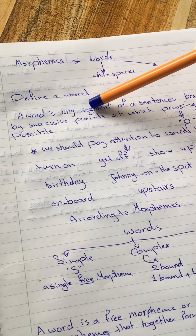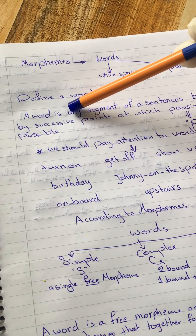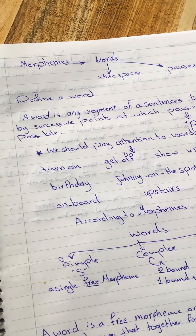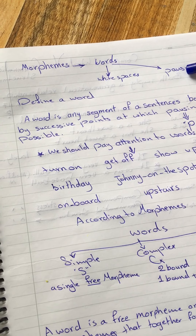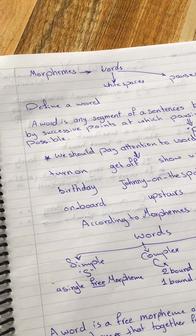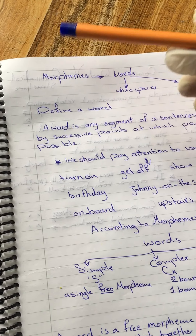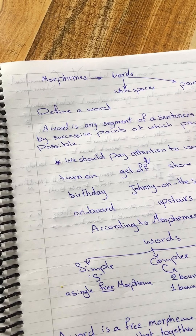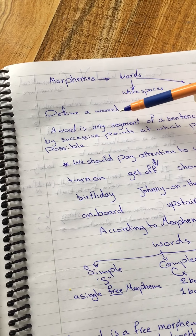There is a space — so this is a word, this is a word, this is a word. We recognize words according to spaces in writing. In spoken language, we recognize words according to pauses — a very short time of silence. For example, if I say 'define a word': define — pause — a — pause — word — pause. So how many words do I have here? Three words.